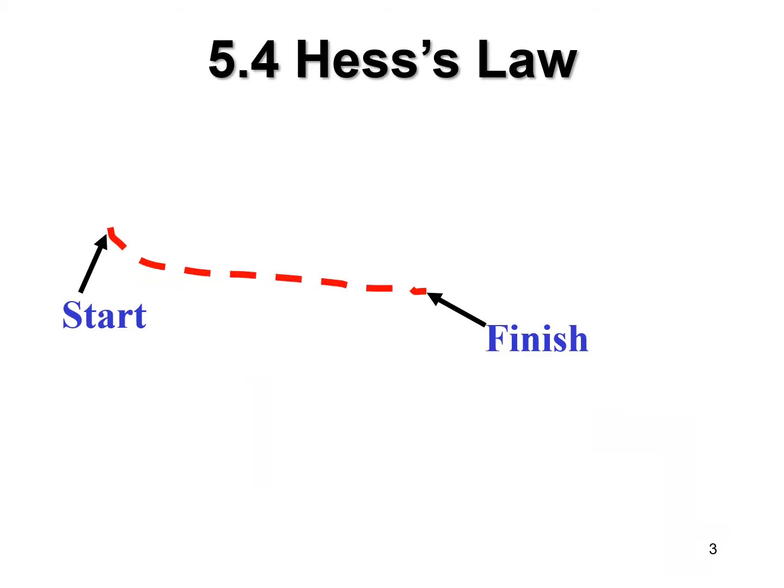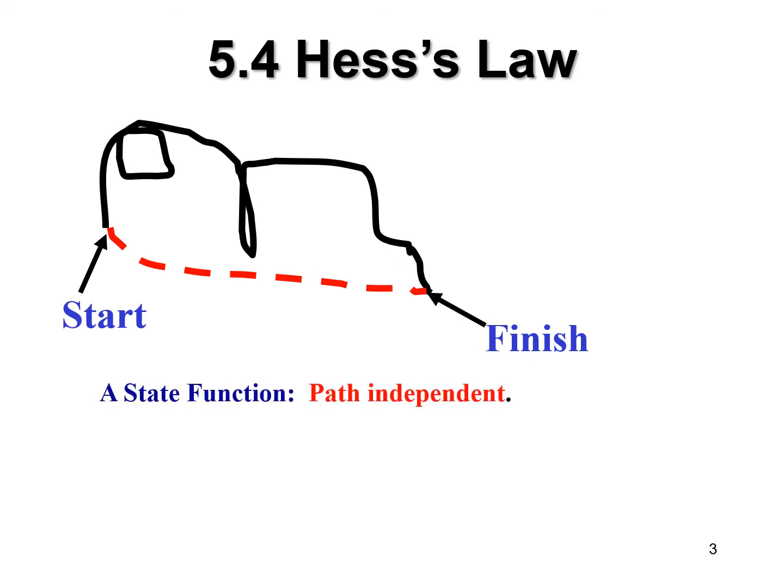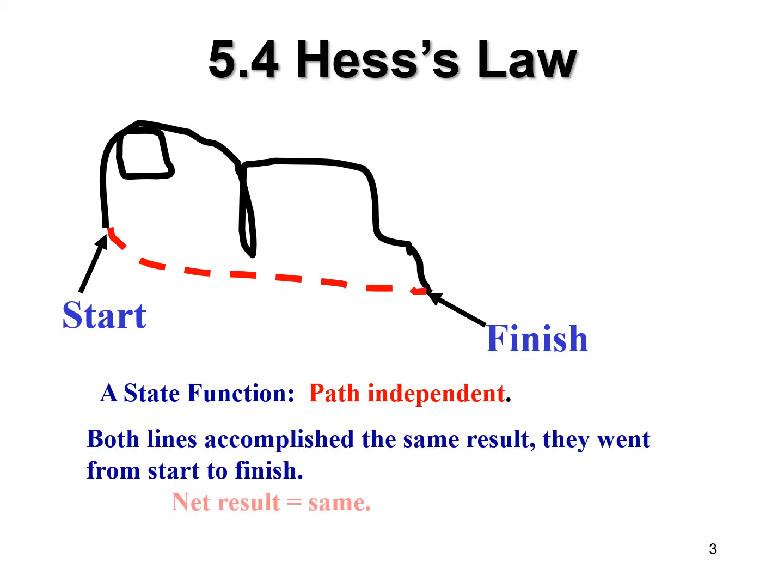So it doesn't matter of the route, it just matters where you end up. And to further that, if there's a start and finish line, you could take the short way there, or you could take the really long way there. And this is what is known as a state function. You would have seen them talk about a path independent and a state function, and both lines are accomplishing the same thing. The net result is the same, and that is what we care about.